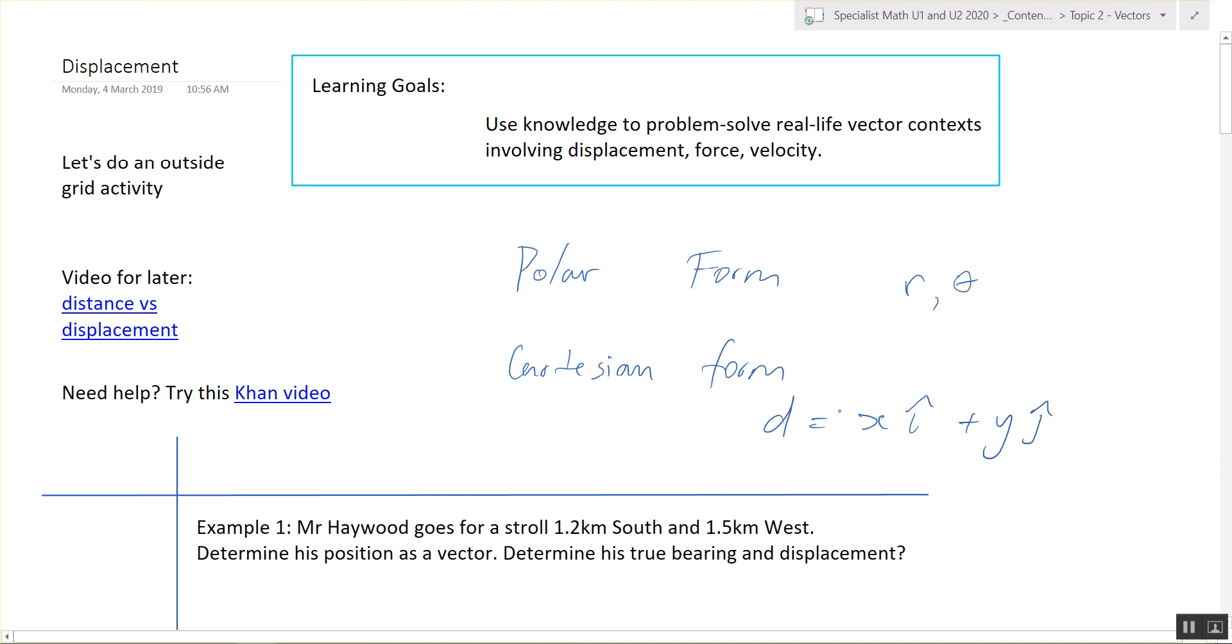Displacement is given different letters. In physics, it's an S. In specialist mathematics, it's usually an R. So this is Cartesian. This is polar.